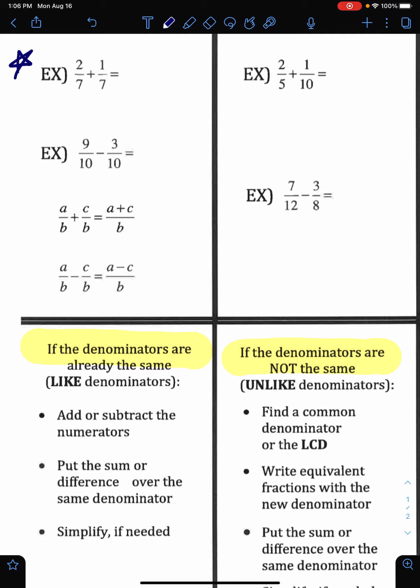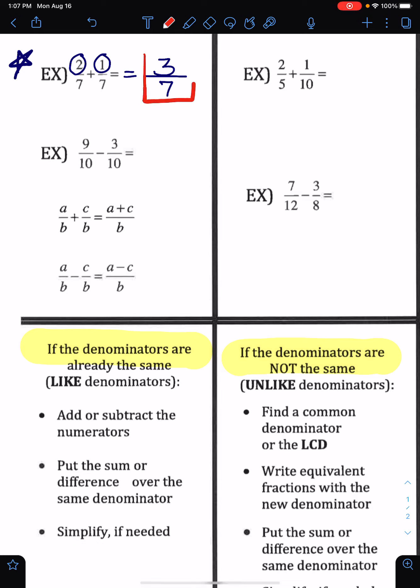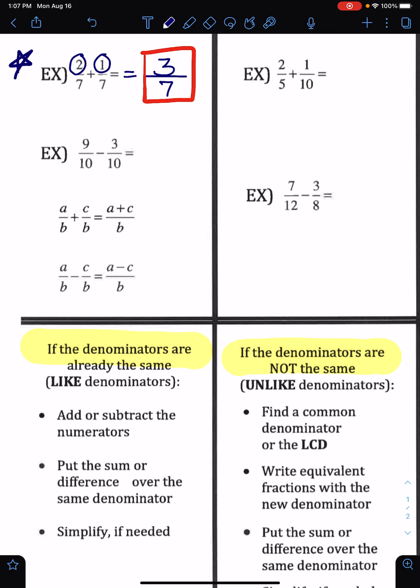If you have fractions that have the same denominator, you're just going to add the numerators and keep the denominator the same. So we're going to keep 7 as our denominator and add 2 plus 1 to get 3. The answer to this problem is 3/7. You should always check to see if you can simplify your answer. In this case you cannot, so our answer is 3/7.